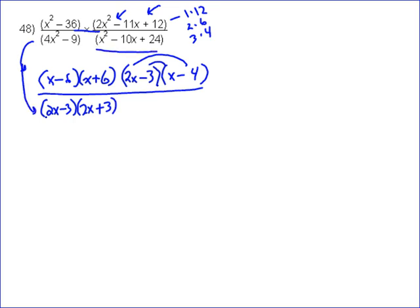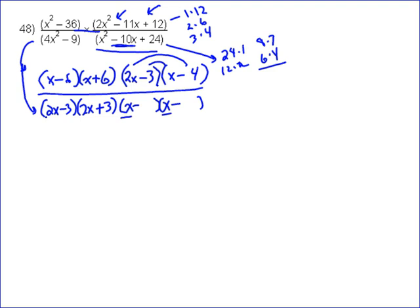Now this one I need to factor. I need x times x to get x squared, and then to get 24, I'm going to have to have a negative and a negative because I need negative 10x. The factors of 24 are 24 times 1, 12 times 2, 8 times 3, 6 times 4. If they're both going to be negative, they have to add to negative 10 — well, that's going to be 6 and 4, since negative 6 and negative 4 add to negative 10.